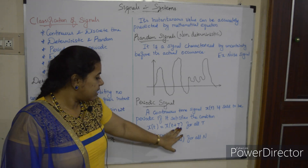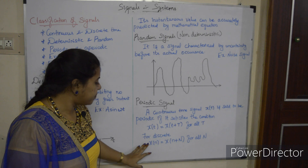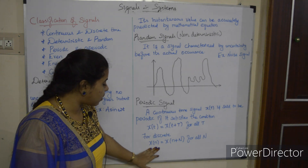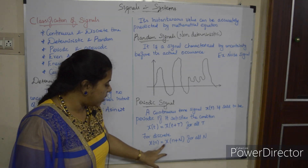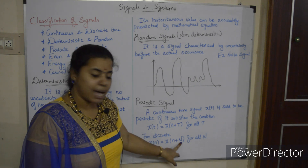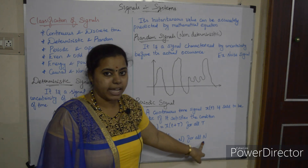For a discrete signal, the condition is x(n) = x(n + N) for all n.